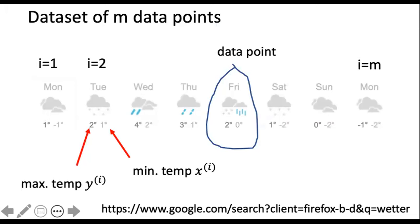We cannot fully characterize a whole data point, as this would amount to collecting all data about one single day. Instead we use only two properties to characterize data points. One property of a data point, or a day, is the minimum daytime temperature — this can be determined easily during the morning of any ski day. As a second property we use the maximum daytime temperature, which is what we are interested in. We refer to such a quantity of interest as the label of a data point.